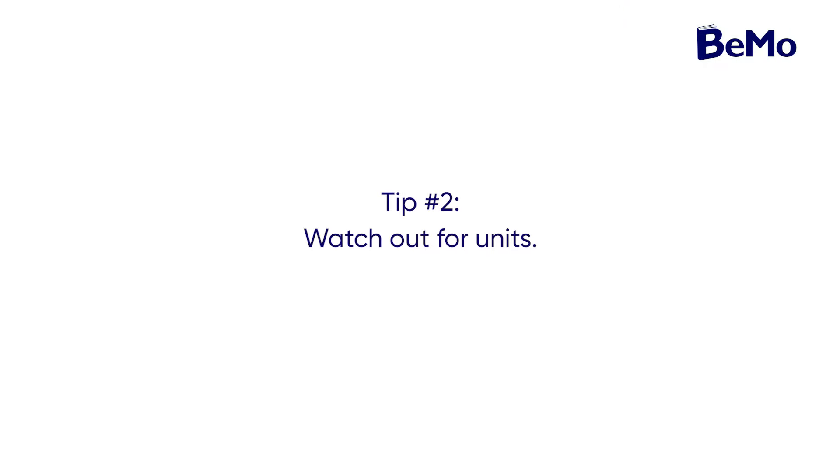Imagine you just spent five minutes on lengthy calculations and your solution is not among the answer choices. Oftentimes a quick unit conversion can reveal the correct answer, or you may have simply used the incorrect units in your equation. Understanding how to convert between units and ensuring you can do this quickly without a calculator is essential for the chemistry and physics section of the MCAT.